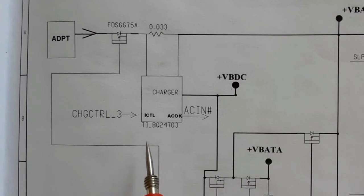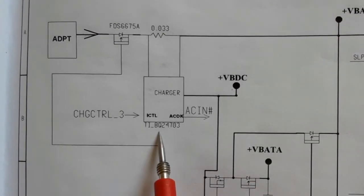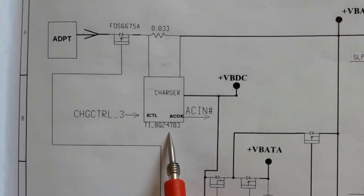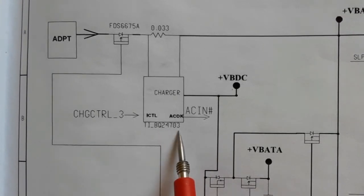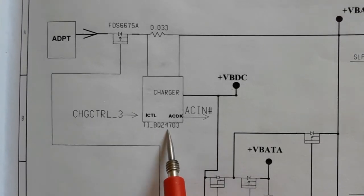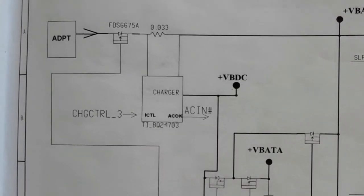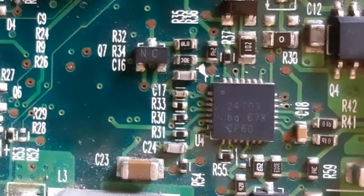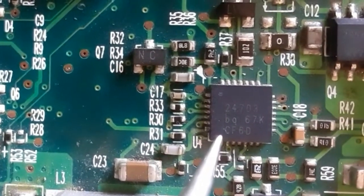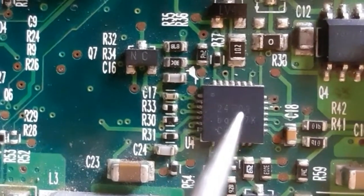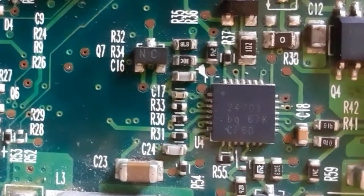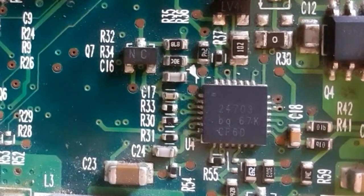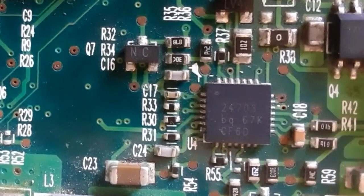Now we're going to see all these ICs that we have seen in the schematic on a real motherboard. We will begin with the BQ24703. Here we have 24703 — this is the charge IC on the real motherboard.